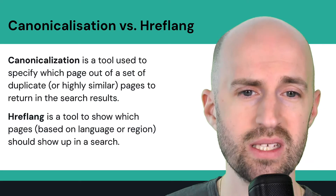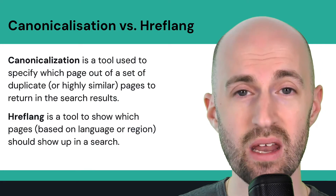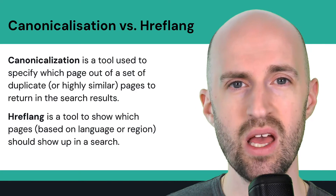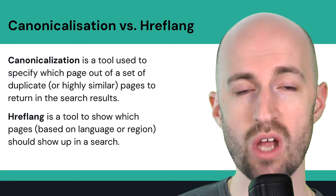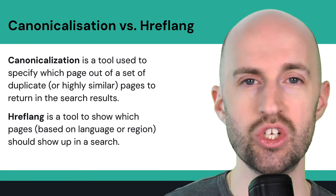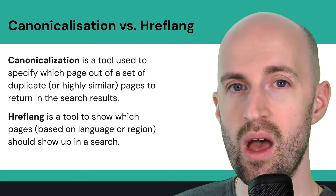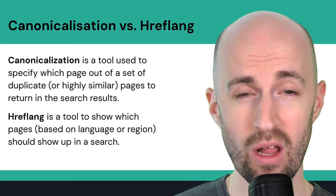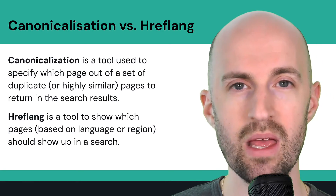Let's talk about the differences between canonicalization versus hreflang, as this can be a common confusion point. Canonicalization specifies which page out of a set of duplicate or highly similar pages to return in search results — so if you have five pages targeting the same topic, you tell Google which one to return, otherwise they'll compete and cause ranking issues. Hreflang, on the other hand, is used for language and/or country targeting, where content might differ slightly by country or language. You can and should use these two alongside each other, because you might have duplicate content within a specific language-country pair.